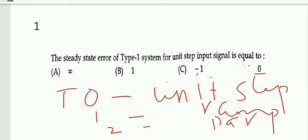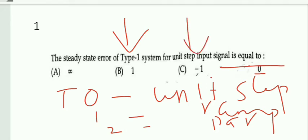The given question is type 1 with unit step input. For a type 1 system, only unit ramp has error — unit step is one step before, so it has an error of zero. Option D is the correct answer. At the same time, for a type 1 system, the unit parabola has an error of infinity. This table is very important.